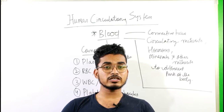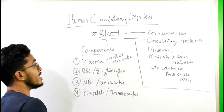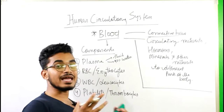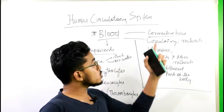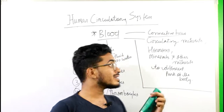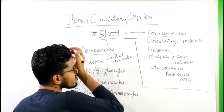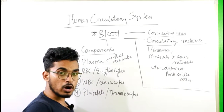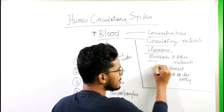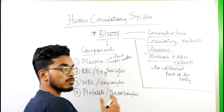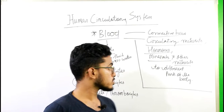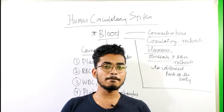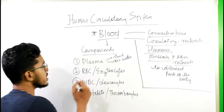Now let us talk about blood. Blood is a connective tissue — there are various types of tissues, and under connective tissue, blood is an example. The role of blood is circulating nutrients, hormones, minerals, and other substances from one part of the body to different parts of the body. Let us understand what components are present in the blood.